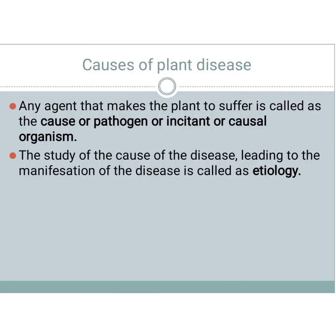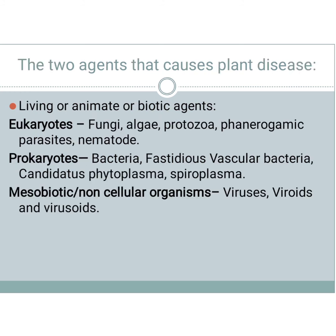The causes of plant disease: a pathogen is any agent that makes the plant suffer — it is also called an incitant or causal organism. The study of the causal agent of the disease and its relation to the susceptible plant is called etiology. This is a very important objective question — they will ask 'what is etiology?'